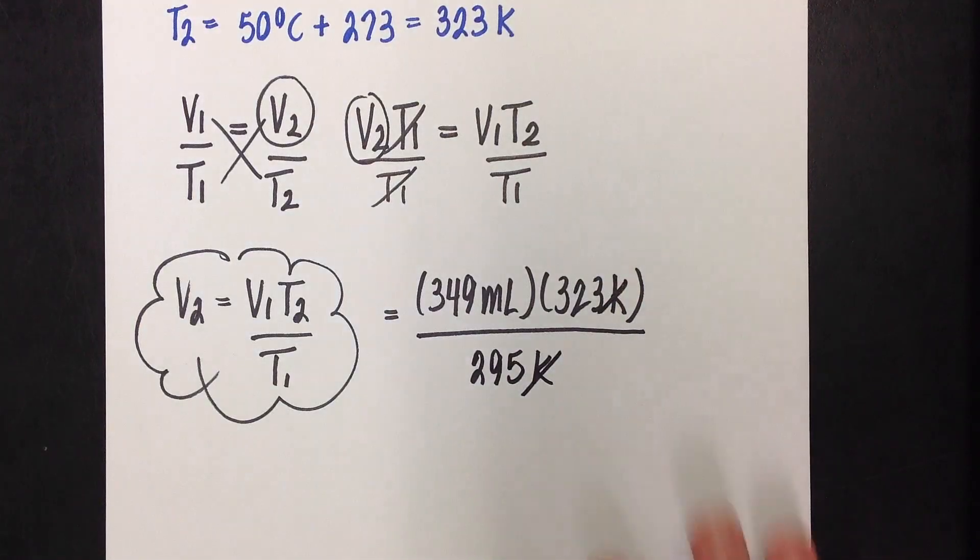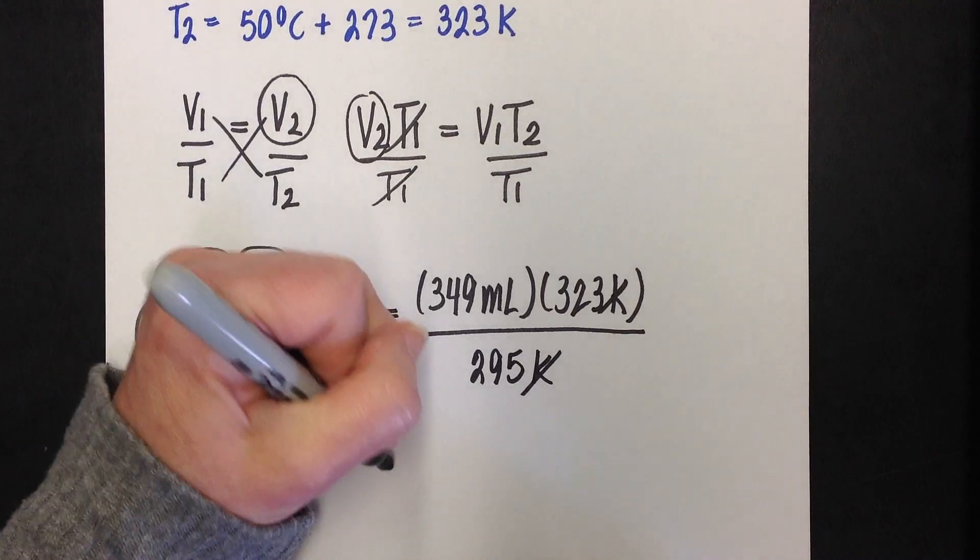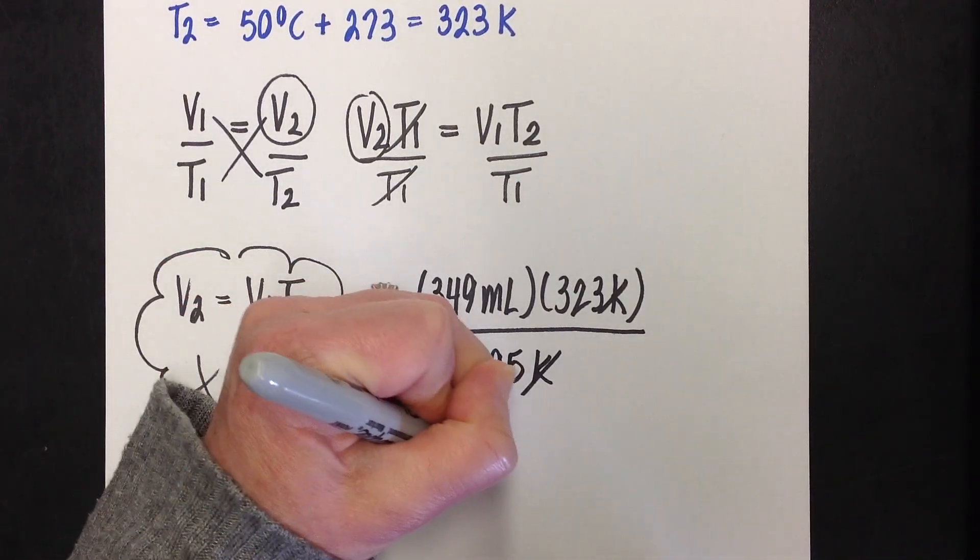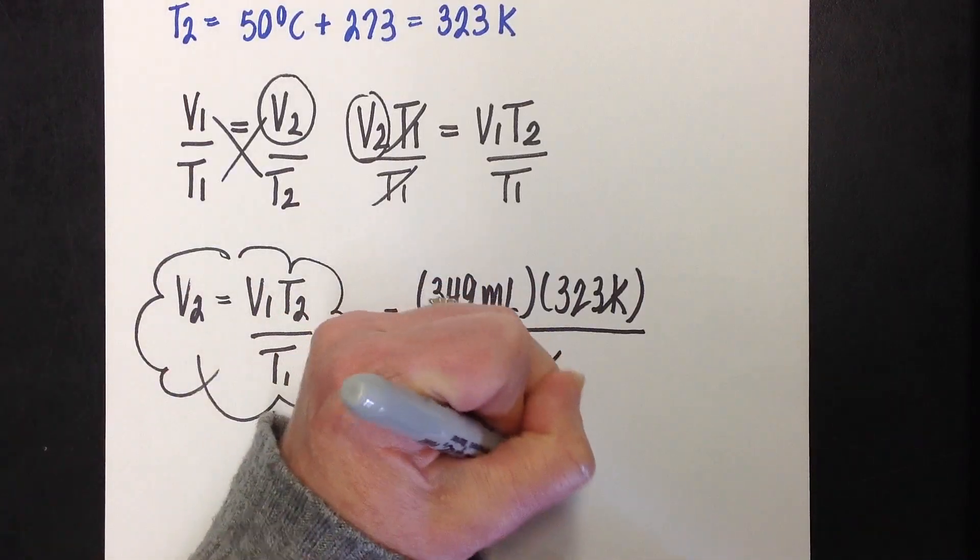Kelvins cancel. I can clearly see that because I put all of my units in my work. That leaves me with milliliters, which is a unit of volume. That's good news because that's what I was asked to solve for. So, we're going to say 349 times 323 equals divided by 295, and that gives me 382.13 milliliters.